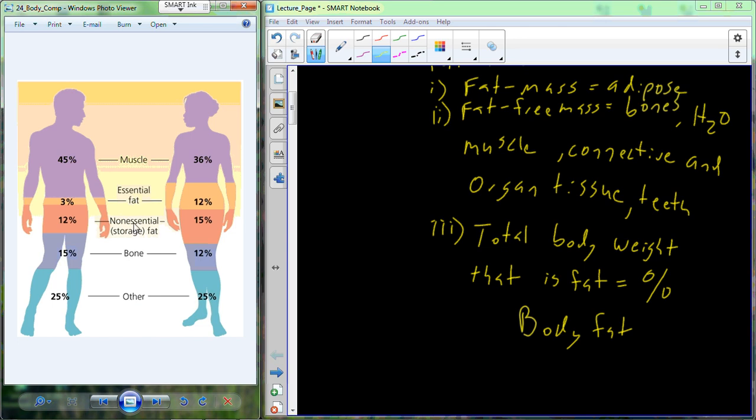And then you have two sources of fat: fat that's considered to be essential, and we'll talk about that in just a second - low in males, higher in females, 3% males, 12% females. And then we have non-essential or storage fat. The average male carries around about 12%, the average female about 15%. It's better to have much lower amounts of non-essential fat than the 12% to 15% that's shown here. This is just the average between males and females.